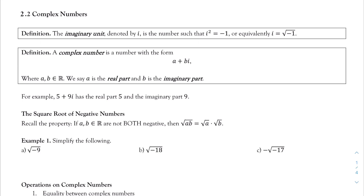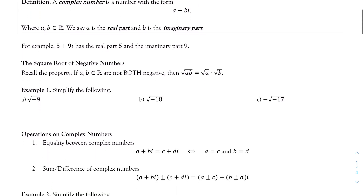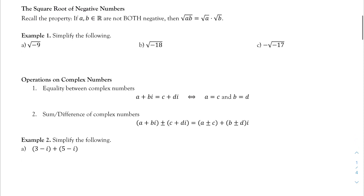So how do we deal with imaginary numbers? The first place we encounter them is when taking the square root of a negative number. To do that, I want to recall a property: if a and b are real numbers that are not both negative, then the square root of a times b equals the square root of a times the square root of b. Using that property, let's look at Example 1.